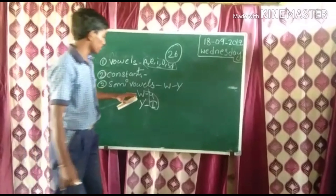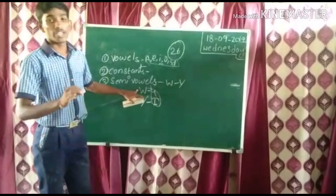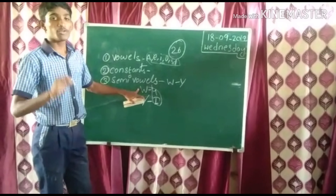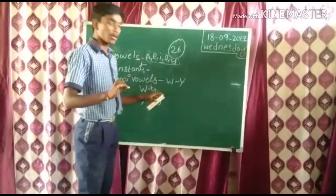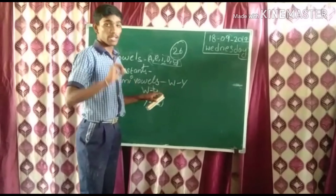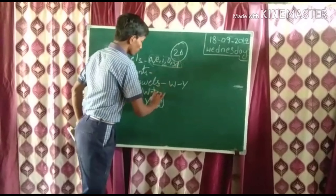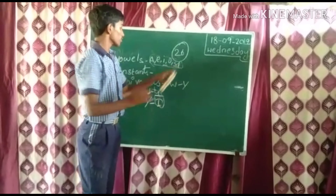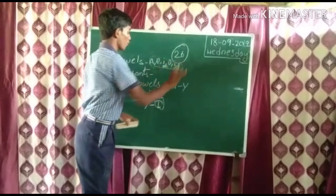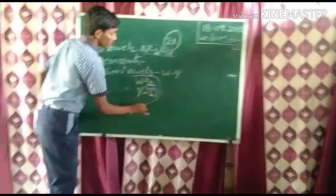Why are these 2 called semi-vowels? When we pronounce W — W, U also comes. This is a vowel sound. Y — I also comes. This is a type of vowel. That is why these 2 are semi-vowels.